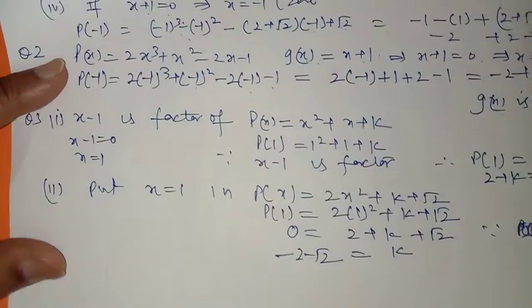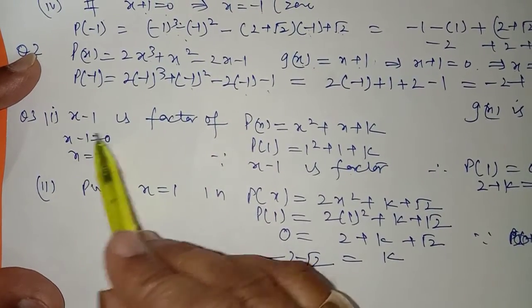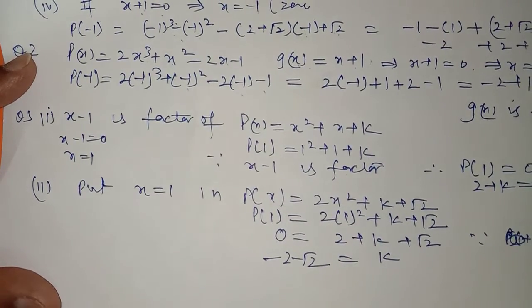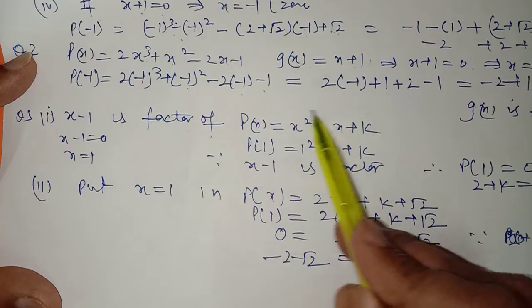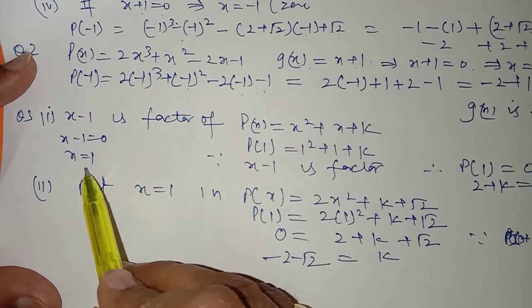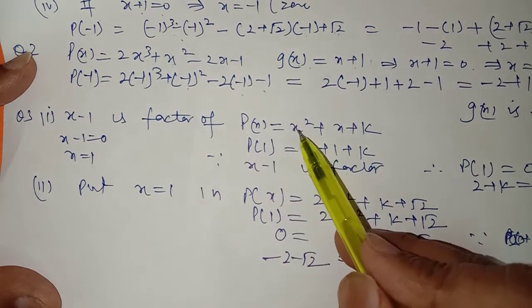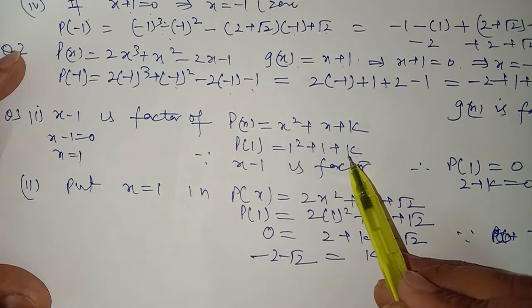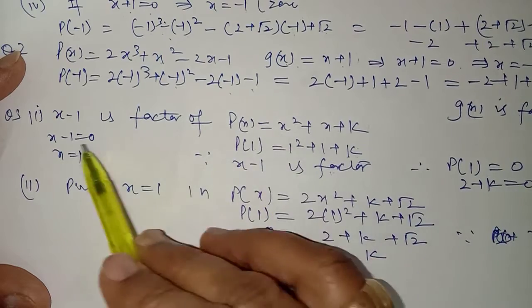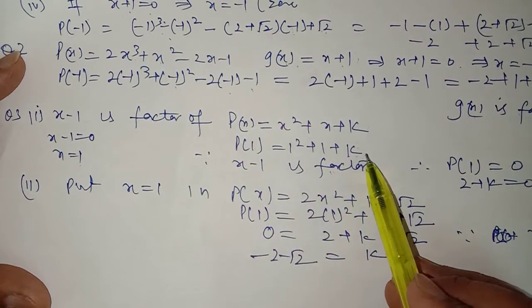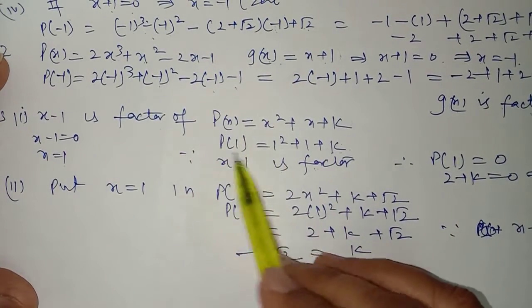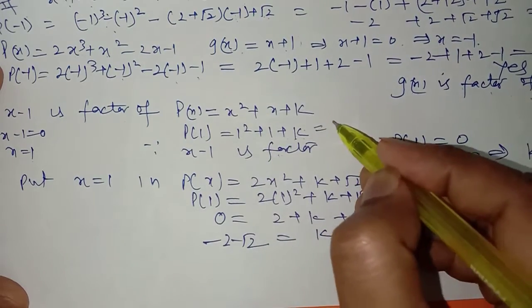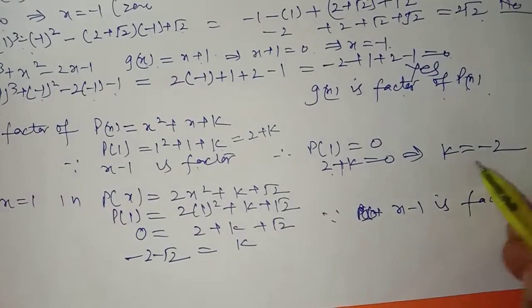In question 3, it is given that (x − 1) is a factor of the polynomial, and you have to find the unknown value k. Since (x − 1) is given as a factor, put the divisor equal to 0 — you get x = 1. Replace x by 1 in the polynomial: 1² + 1 + 5, giving 2 + k. Since (x − 1) is a factor, the remainder p(1) must equal 0. So put 2 + k = 0, which gives k = −2.